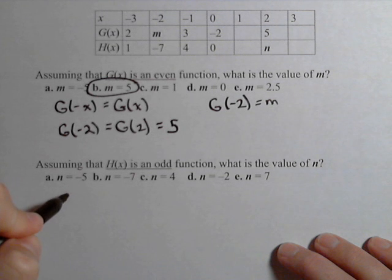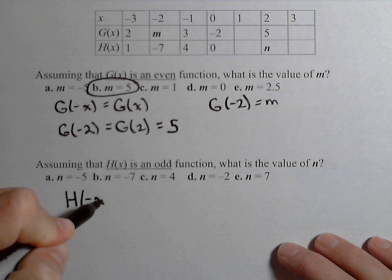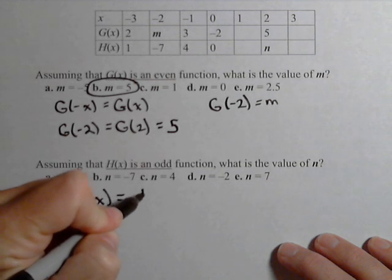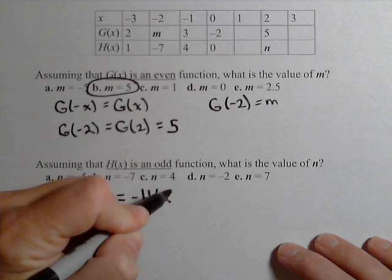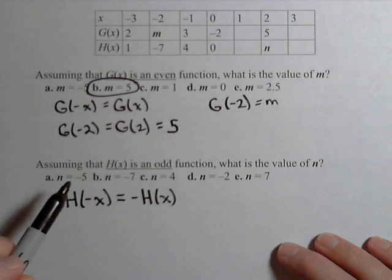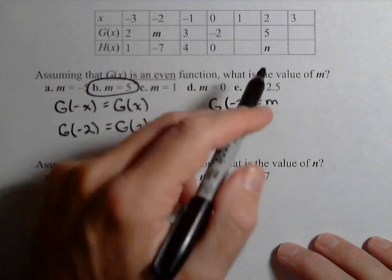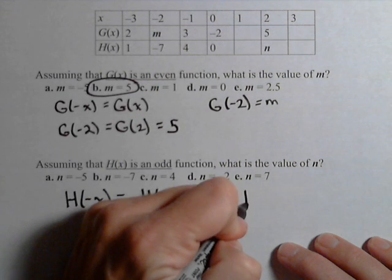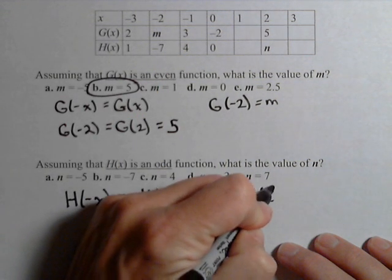H of x is an odd function. So once again, it's important to know the definitions. H of negative x, if it's odd, equals negative h of x. These are important definitions. We want the value of n, which is h of two.